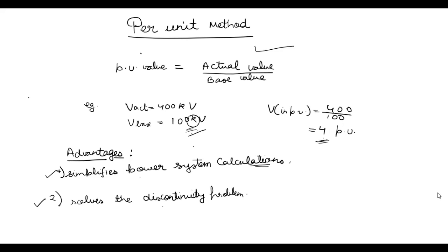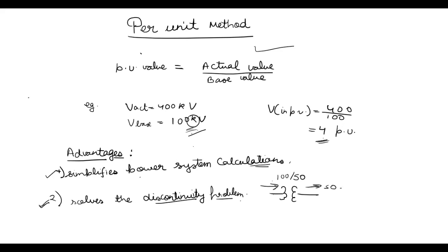The second advantage is that it solves the discontinuity problem. The discontinuity problem arises due to transformers. Suppose in a network we have a transformer where voltage is 100 V on one side and 50 V on the other — there is a discontinuity. This creates problems in calculation, and this problem is solved by using the per unit method.